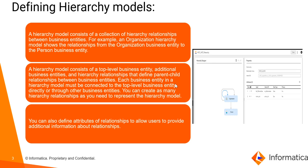So what is a hierarchy model? A hierarchy model consists of a collection of hierarchy relationships between business entities. For example, an organization hierarchy model shows the relationships from the organization business entity to a person business entity. Each business entity in a hierarchy model should be well connected to the top level business entity directly or through other business entities.